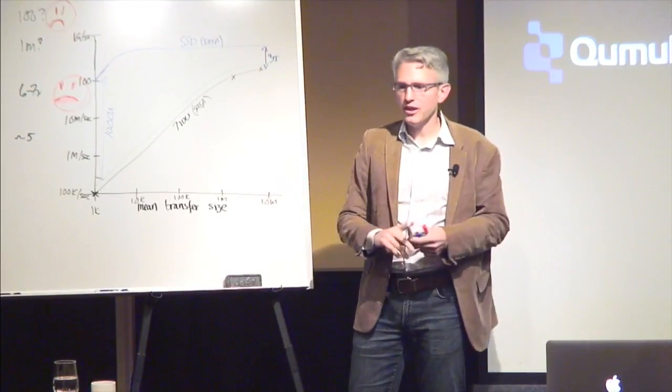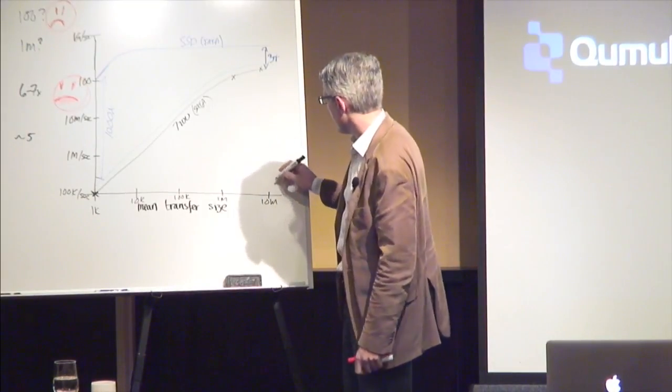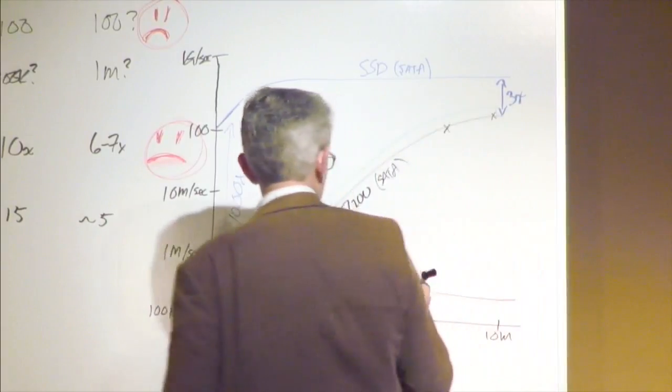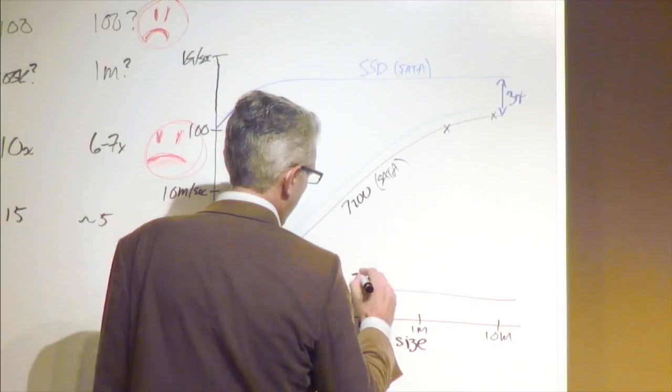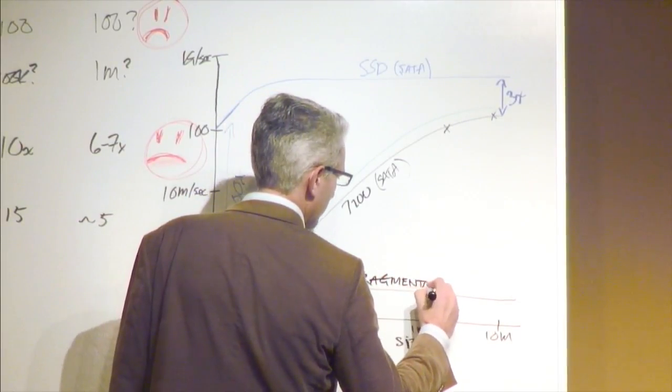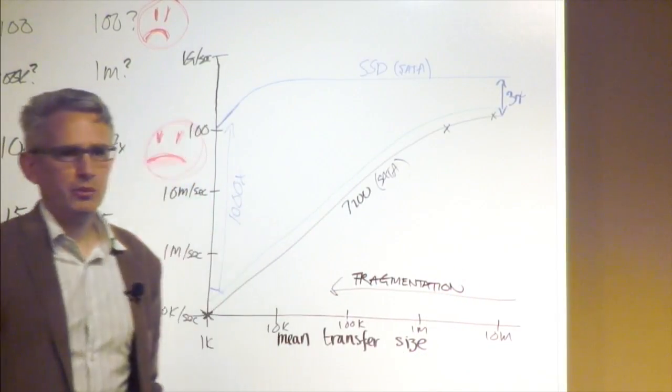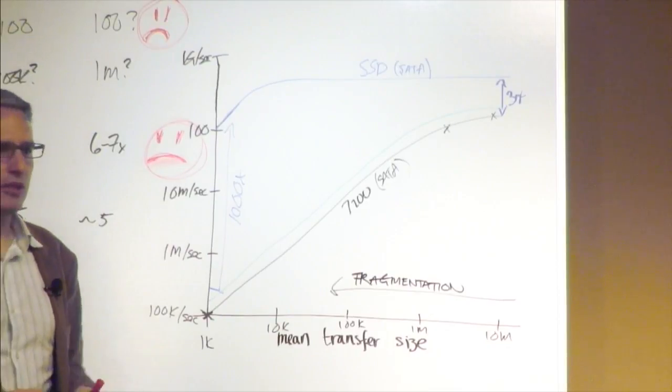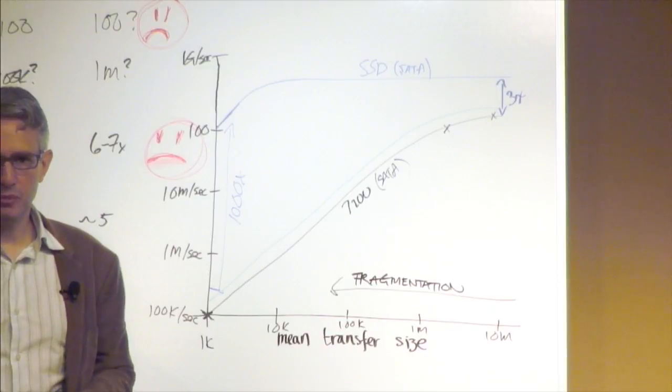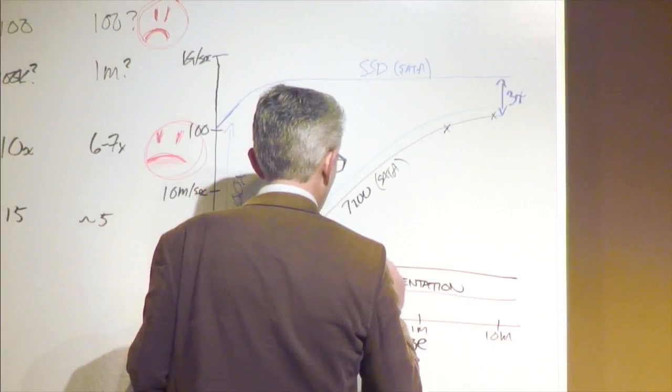Five things pretty much are going to drive this down. The first thing that drives down mean transfer size is fragmentation. Non-sequential layout of data on disk drives down mean transfer size. That can happen because you have a log structured file system. It can happen because you make a hurried decision about where to put something and it proves to be wrong later on. The second thing is small files.